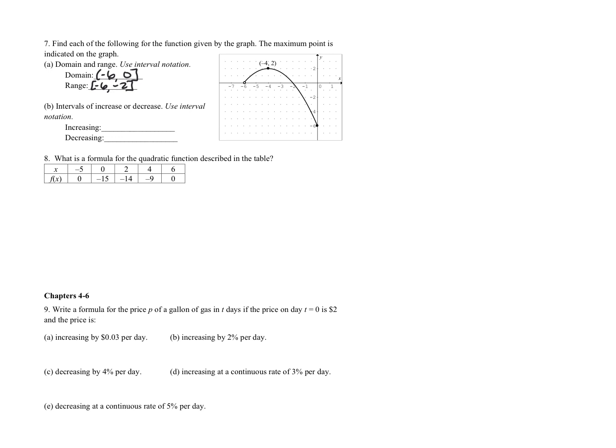For increasing and decreasing intervals: increasing means positive slope. The function increases from negative 6 up to negative 4, but we exclude both endpoints — negative 6 because it's not included in the line, and negative 4 because the slope at the top is zero, neither increasing nor decreasing. Then decreasing, we start at negative 4 and go all the way to 0.